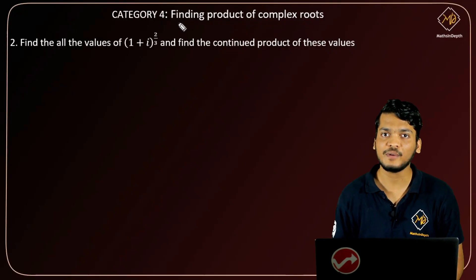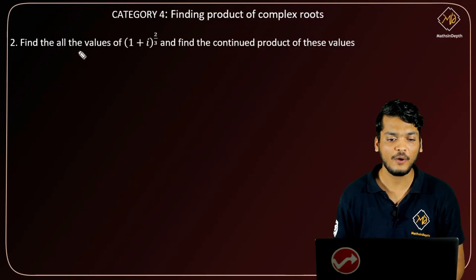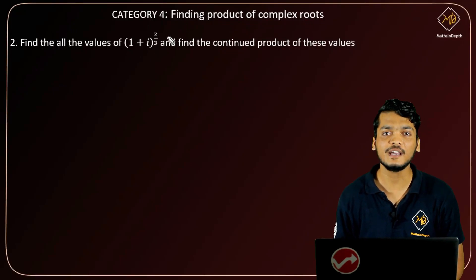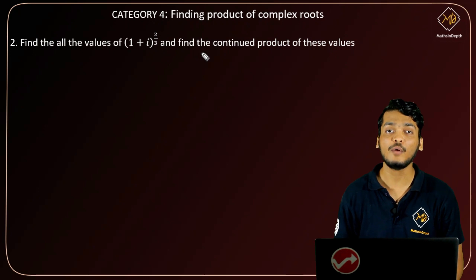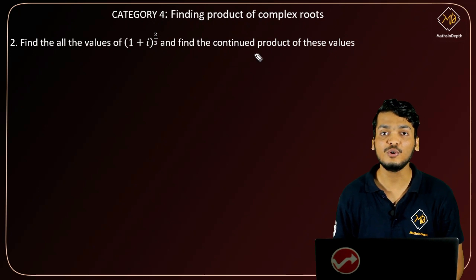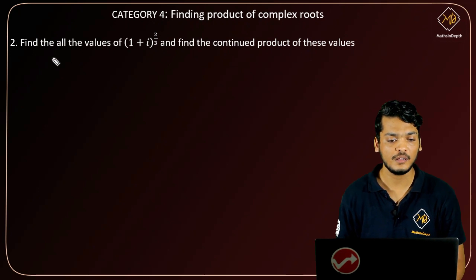In the second question of category 4, we have to find all the values of (1+i) raised to 2/3, and we have to find the continued product of these values.